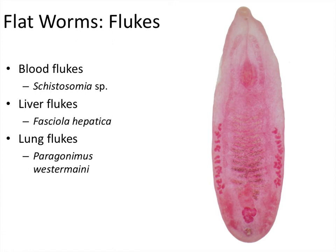Our last type of organism in this lecture is another type of flatworm — the flukes. Flukes are kind of elongated, oval-shaped structures that usually have some kind of sucker on the end — almost like a suction cup — that they use to adhere to a place in your body. The three main types are blood flukes, liver flukes, and lung flukes. Blood flukes are called Schistosoma (genus Schistosoma), liver flukes are Fasciola hepatica — hepatica meaning liver — and lung flukes are Paragonimus westermani.